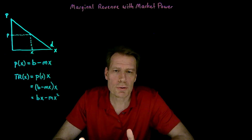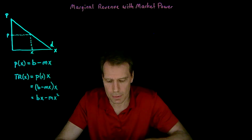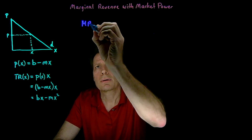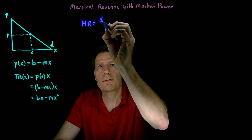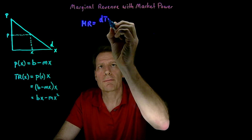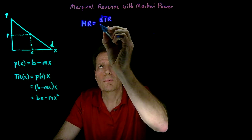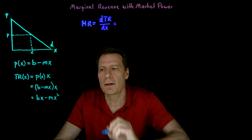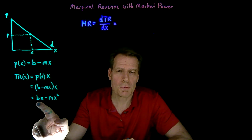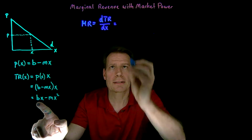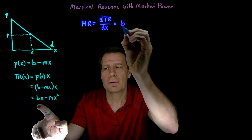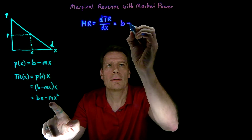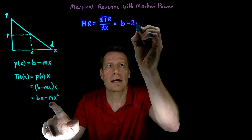Once we know what total revenue looks like, we can derive the marginal revenue. The marginal revenue is just equal to the derivative of total revenue with respect to x. Taking the derivative of bx - mx² with respect to x gives us b - 2mx.